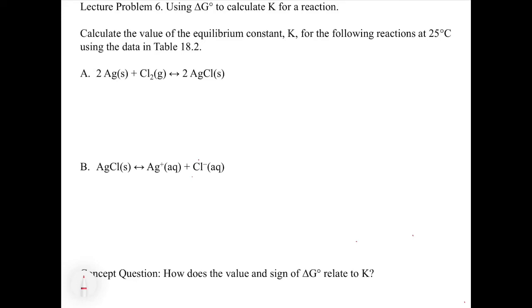In this problem, we're going to use the equation that we just looked at, where delta G is equal to minus RT ln K to come up with an equilibrium constant for a reaction. The problem says, calculate the value of the equilibrium constant K for the following reactions at 25 degrees Celsius using the data in table 18.2. So when you're using delta G is equal to minus RT ln K, you really have two choices. You can either use the delta G naught of a reaction is equal to the delta G of formation of the products minus the reactants, or you can use delta G naught of reaction is equal to delta H minus T delta S. In this case, this particular problem is going to ask us to use the delta G naught of formation way of going about this.